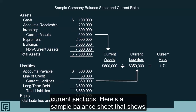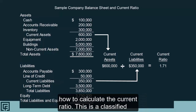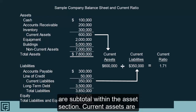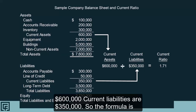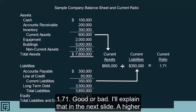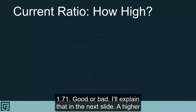Here's a sample balance sheet that shows how to calculate the current ratio. This is a classified balance sheet, meaning current assets and non-current assets are subtotaled within the asset section. Current assets are $600,000 and current liabilities are $350,000, so the formula is $600,000 divided by $350,000 for a current ratio of 1.71. Is 1.71 good or bad? I'll explain that in the next slide.